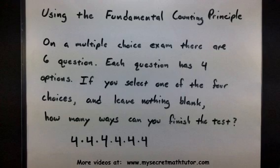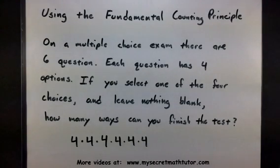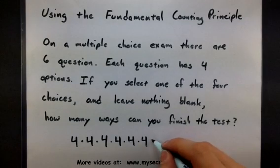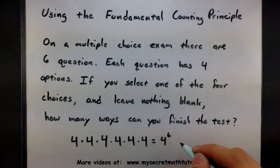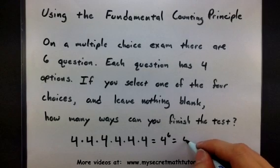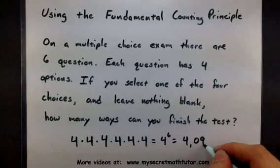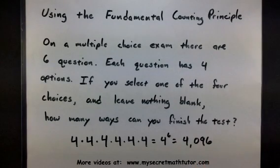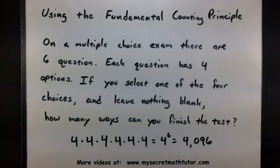In order to find this, we basically have to multiply all of these fours together. You could write this as four to the sixth power, and the answer is 4,096. So if you're careful about what groups you are grabbing from, the counting principle works out really well.